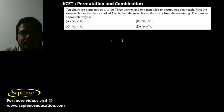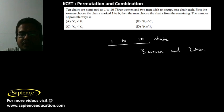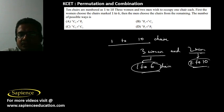Here it is told that 10 chairs are numbered 1 to 10. Three women and two men wish to occupy chairs — the women choose from chairs marked 1 to 6, and the men choose from chairs 7 to 10. So three women must choose out of six chairs, and two men must choose out of four chairs.